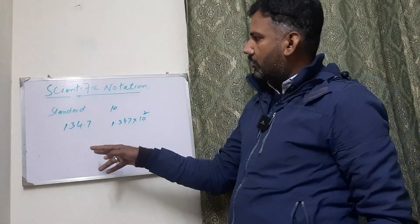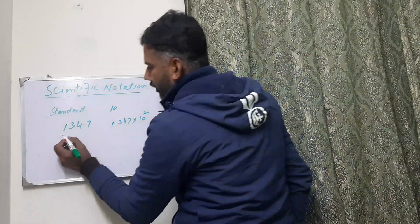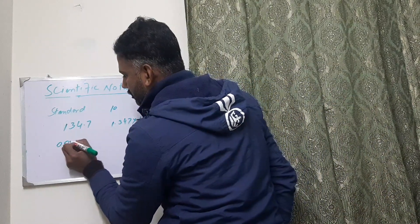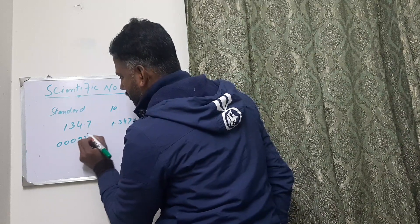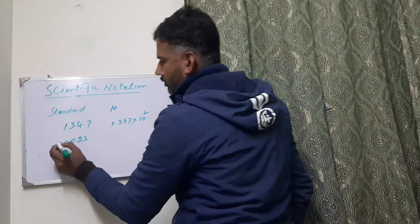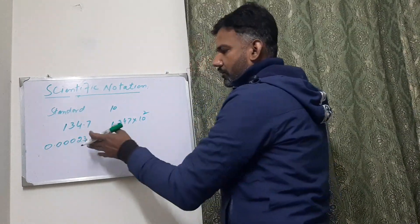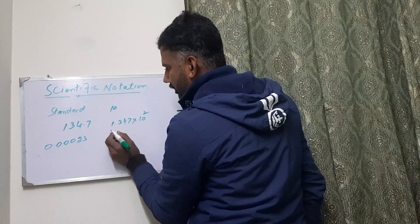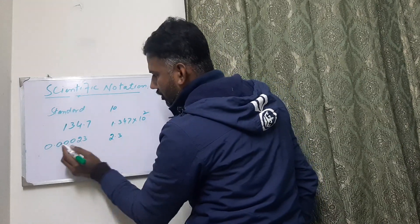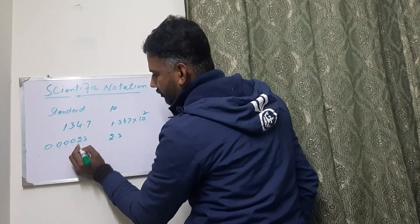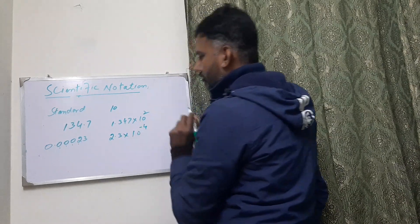So we can write the scientific notation of this number. We can write this in scientific notation as 2.3124 times 10 to the power minus 4.